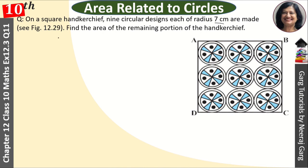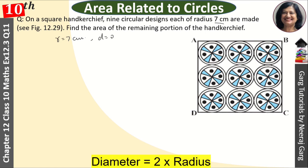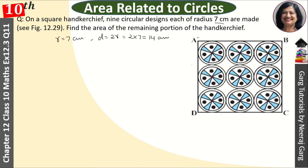The radius given is r, that is 7 cm. So how much will the diameter be? 2r, so this is 2 × 7 = 14 cm. Each dimension shown is 14 cm.